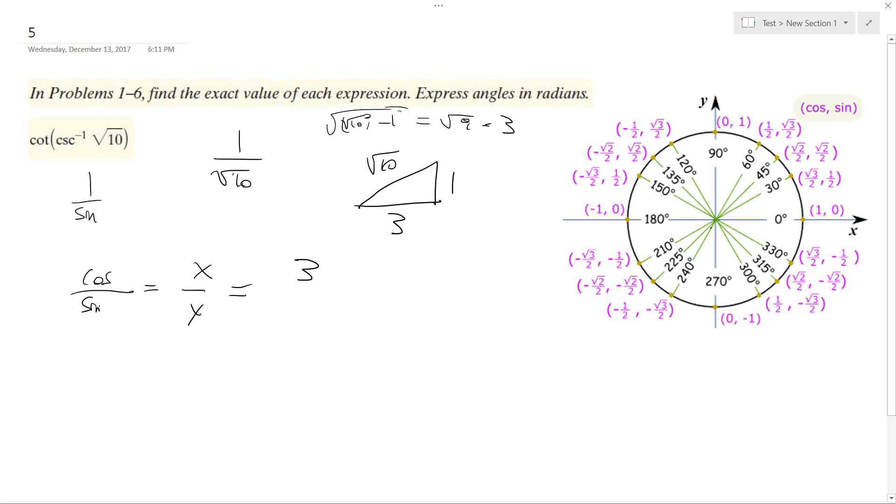And this is going to be bound between negative pi over 2 and pi over 2, because that's where the sine or cosecant is bound to, and y is equal to 1. So ultimately, what we end up with is just 3, and that's it.